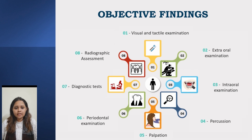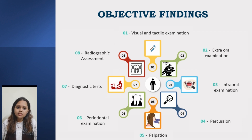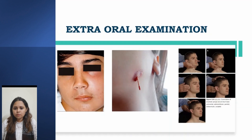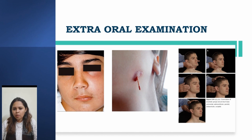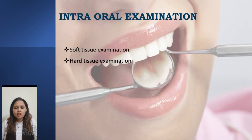The objective findings include visual and tactile examination, extraoral and intraoral findings, percussion, palpation, periodontal examination, diagnostic tests, and radiographic assessment, in order to arrive at a correct diagnosis. In an external examination, we check for any facial asymmetry or swelling, external draining sinus, trauma, or deviations from normal. We must also palpate the submandibular and submental nodes by standing at the 12 o'clock position; if the patient has enlarged and tender nodes, we may not be dealing with an endodontic problem.